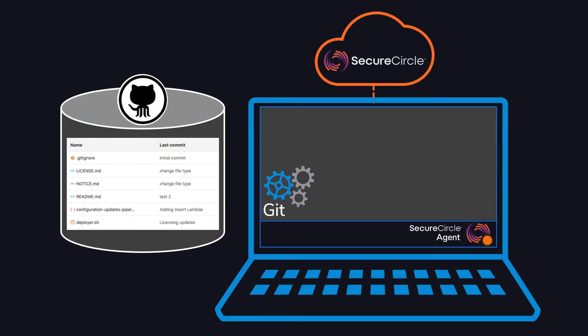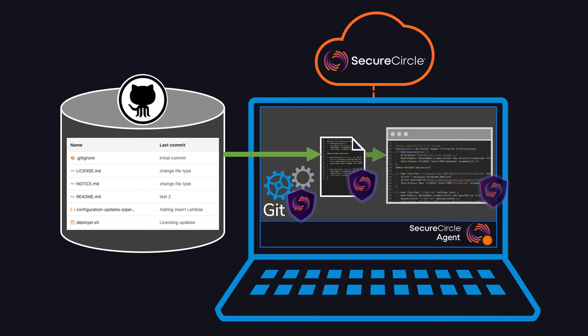In the following demo, you'll see how we can secure source code as it comes out of a code repository onto the endpoint, and it's only accessible to approved processes and applications such as developer IDEs or compilers.